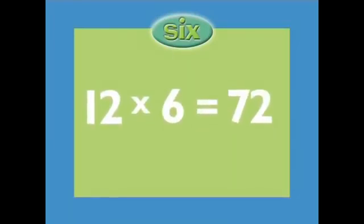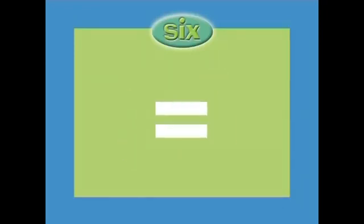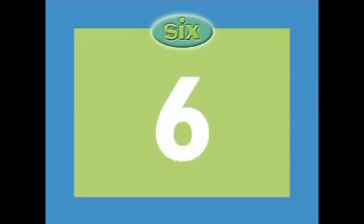12 times 6 equals 72. One times six equals 6, two times six equals 12, three times six equals 18, four times six equals 24, five times six equals 30, six times six equals 36, seven times six equals 42, eight times six equals 48, nine times six equals 54, ten times six equals 60, eleven times six equals 66, twelve times six equals 72.